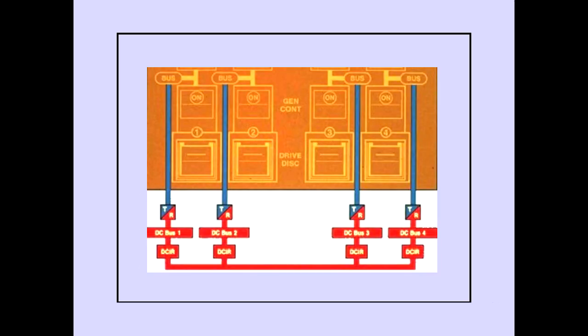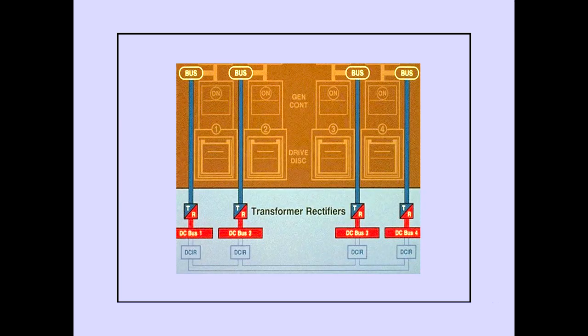The DC power system is designed for fully automatic operation. Each of the four AC buses powers a transformer rectifier, which supplies DC power to its respective DC bus.